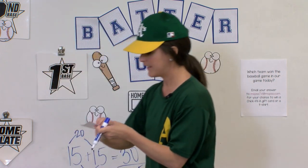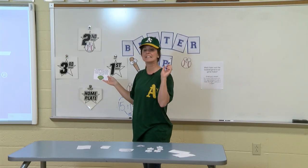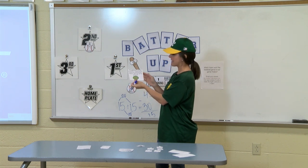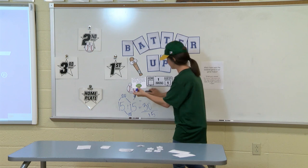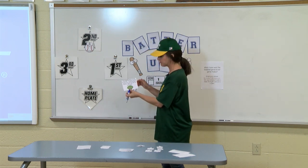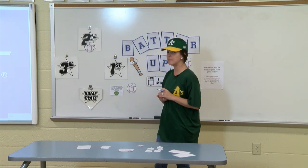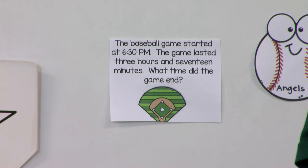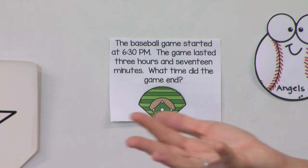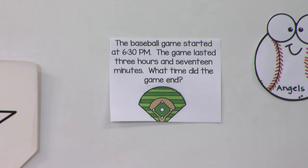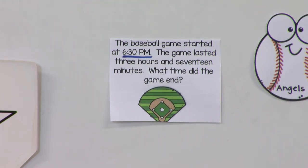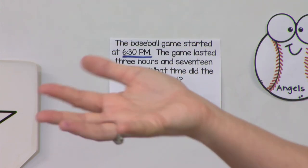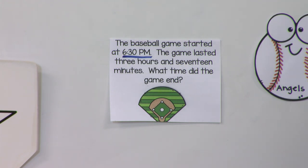Our next problem: the baseball game started at 6:30 p.m. The game lasted 3 hours and 17 minutes. What time did the game end? This involves time — specifically, are we telling time or finding elapsed time? The problem gives us a start time and tells us how long the game lasted, asking for the end time. That means we're finding elapsed time.